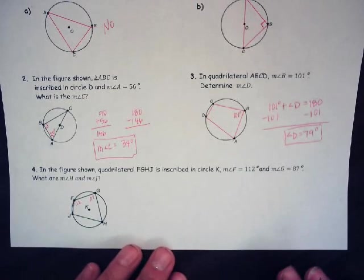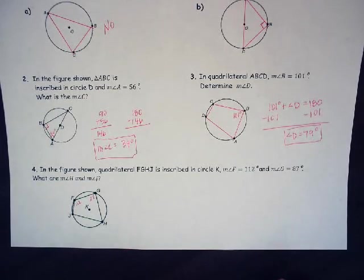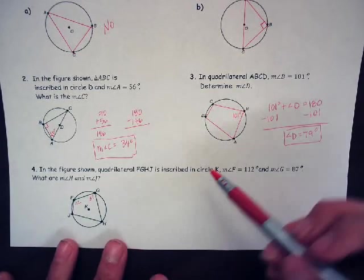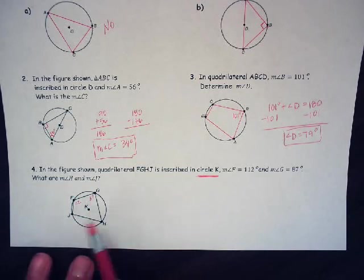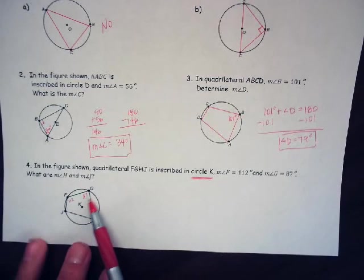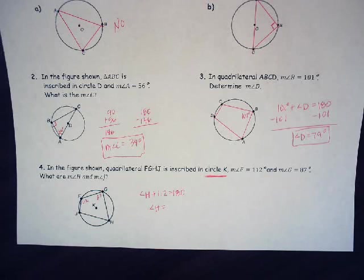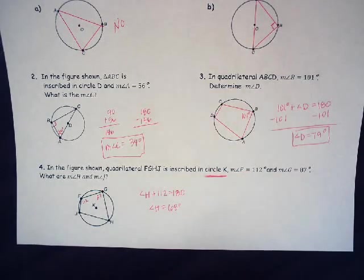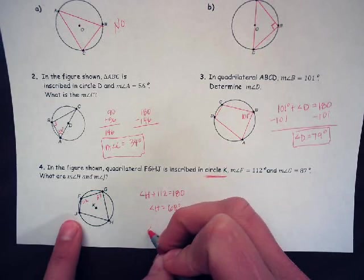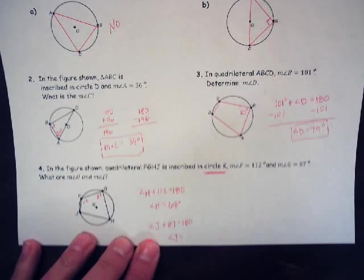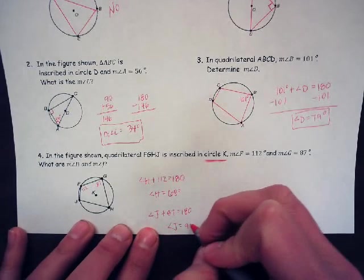In the figure shown, number four, quadrilateral FGHJ is inscribed in circle K. Notice how we always describe the circle as what the middle is. K is the middle point, so I call it circle K. The measure of angle F is 112 and angle G is 87. What are H and J? Okay, so H is supplementary with F. So if I have angle H plus 112, it has to equal 180. So angle H is going to be 180 minus 112, and that gives me 68 degrees. G and J have to be supplementary. So I can say angle J plus 87 equals 180. So angle J is going to be 180 minus 87, and I get 93 degrees.